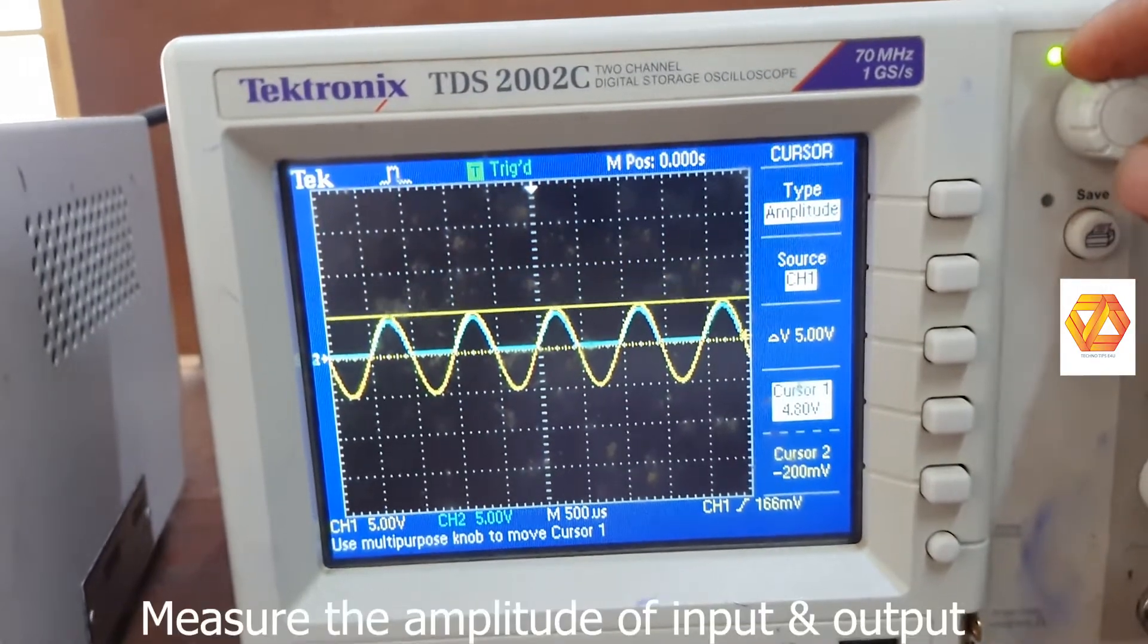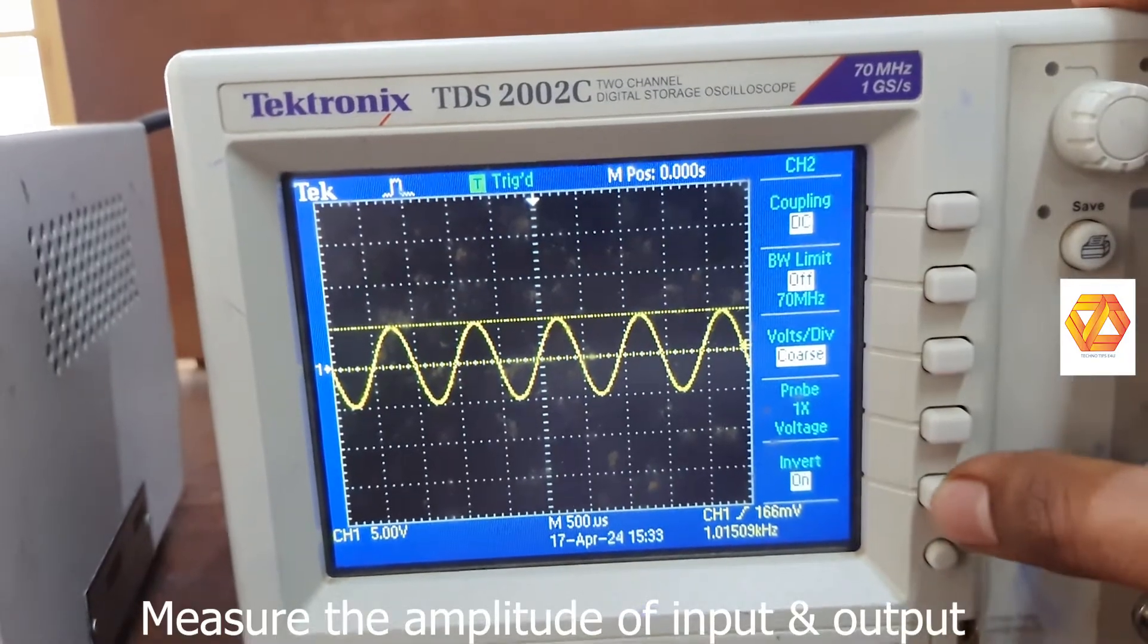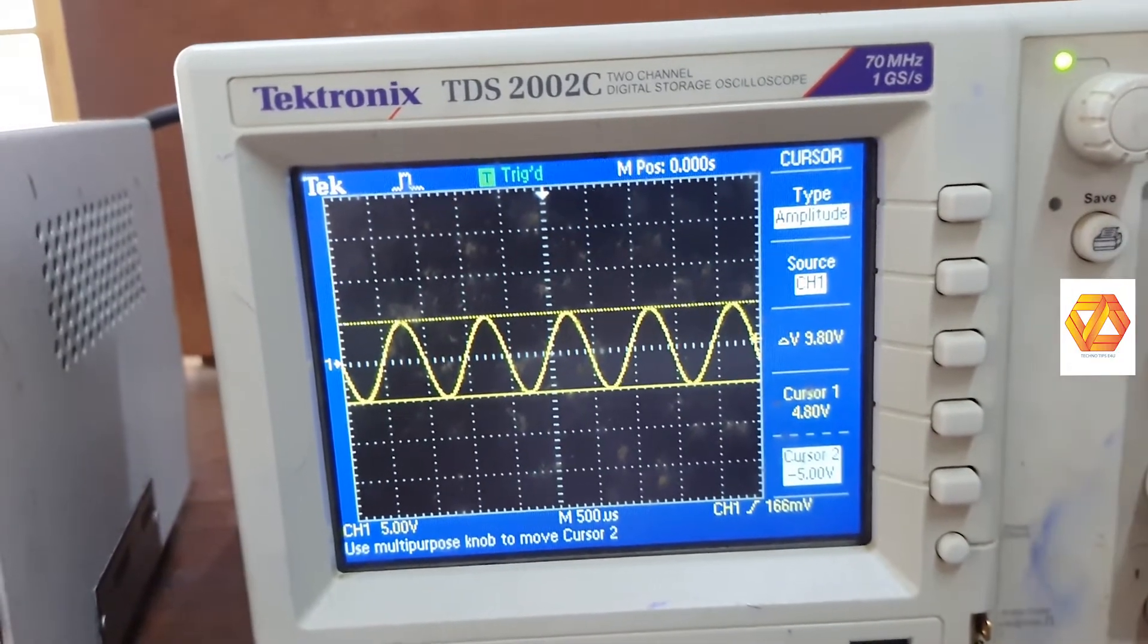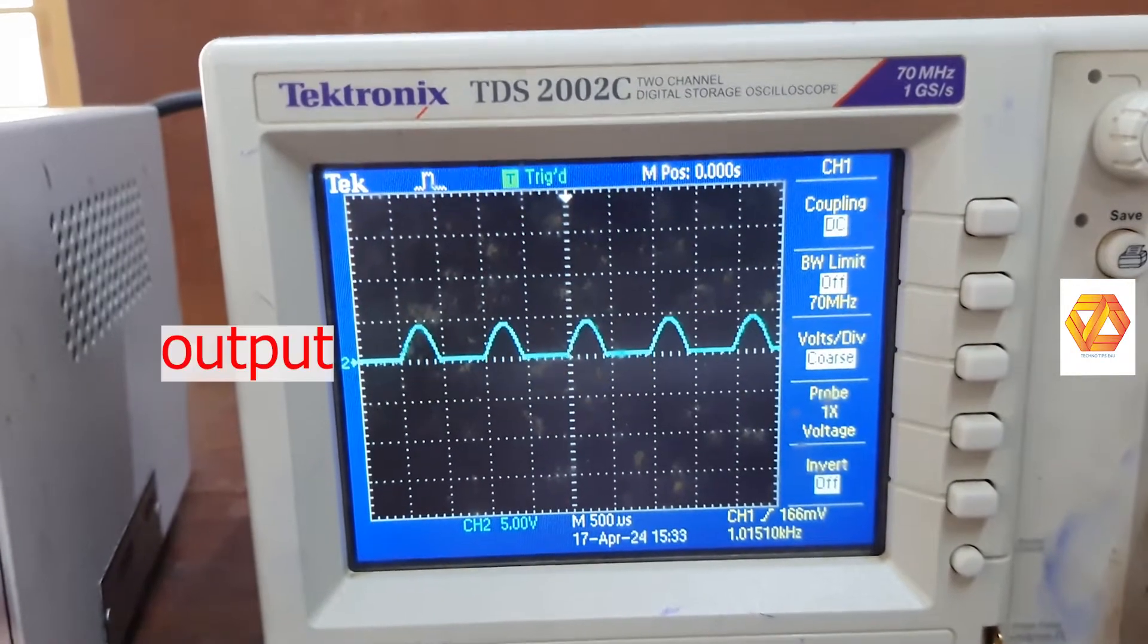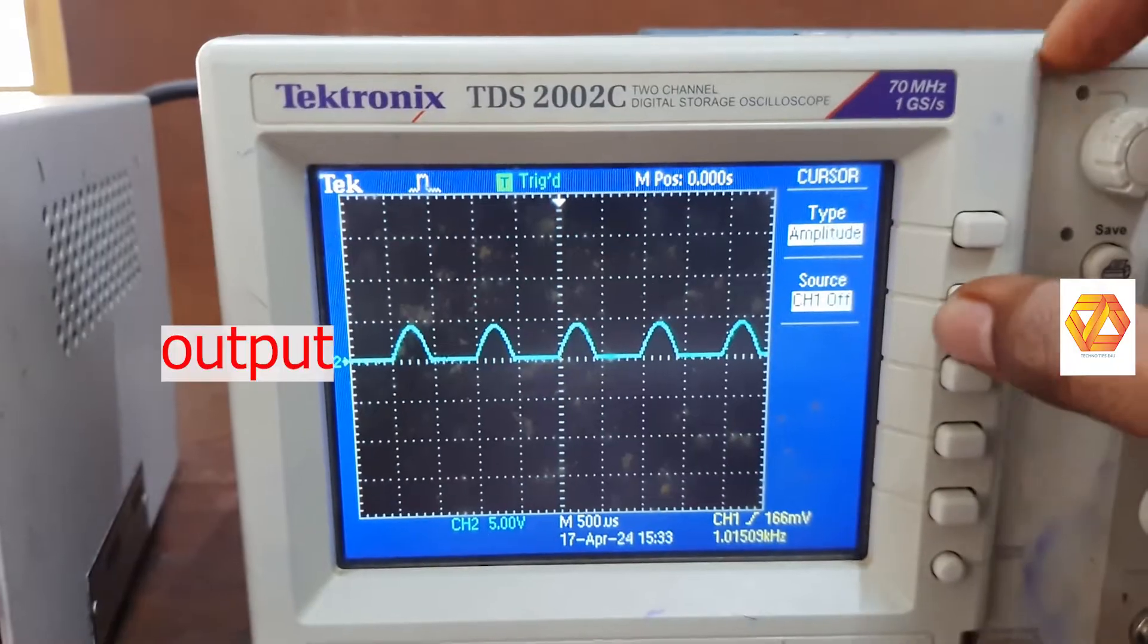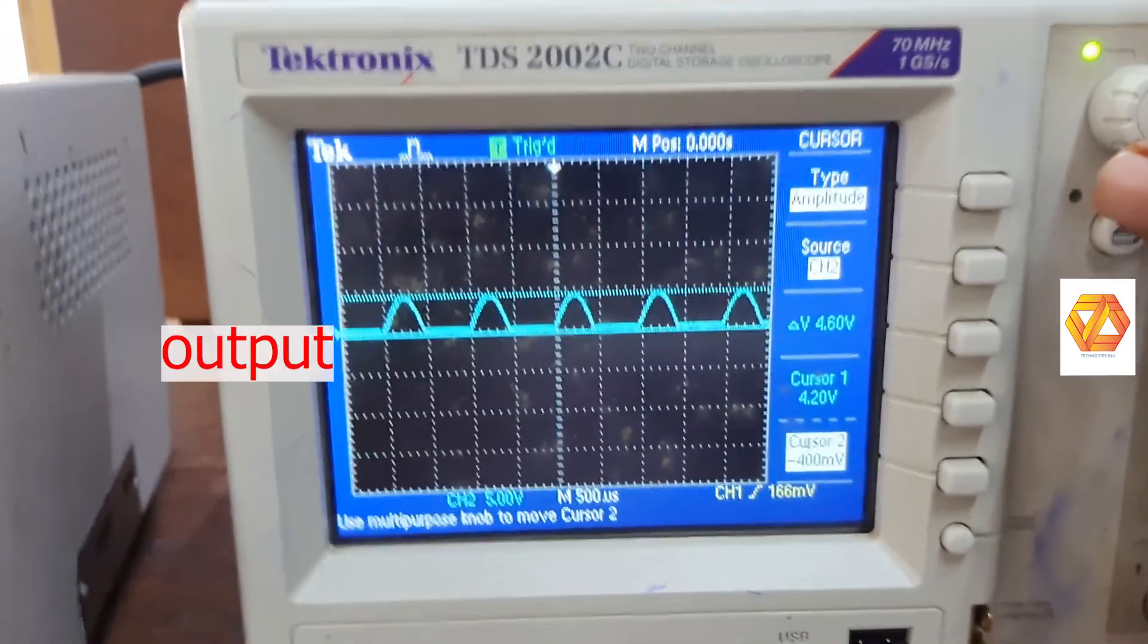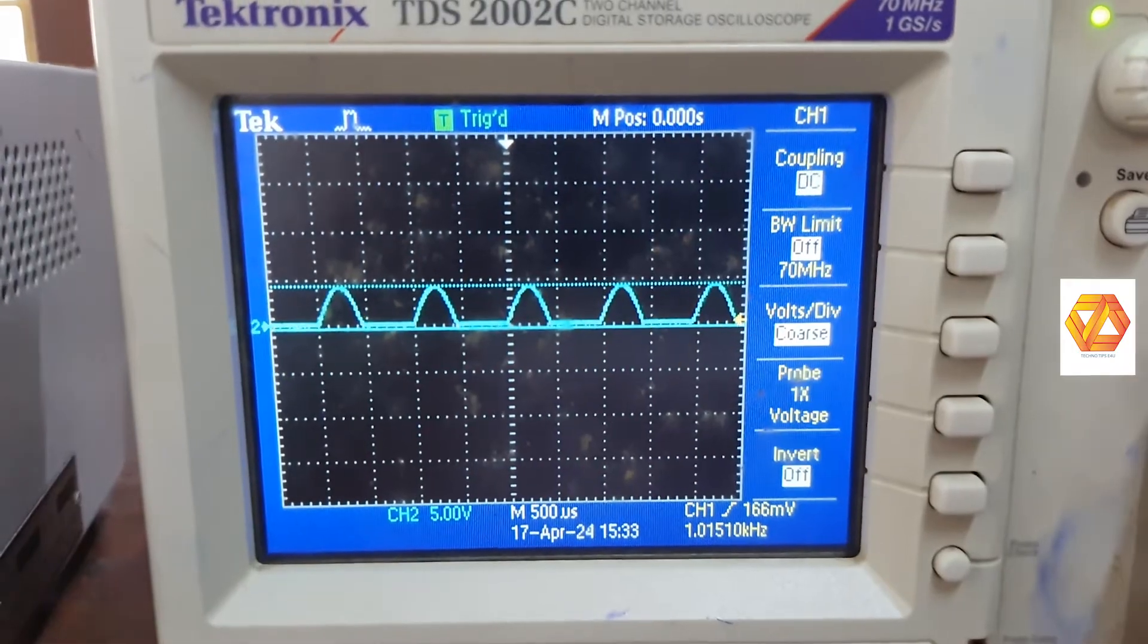In the output, only the positive part of the input is available. One more thing: the output amplitude is a little bit less than the input. The peak value of the positive output waveform is a little bit less than the peak value of the input. This is because the barrier potential of the silicon diode is around 0.7 volts. Up to 0.7 volts of the input wave, the diode will not conduct. The amplitude of the output waveform is less by 0.7 volts.